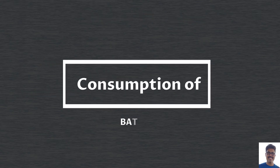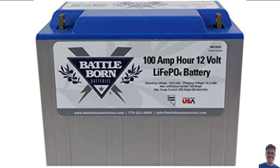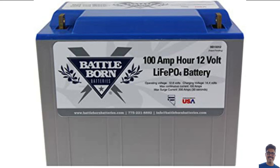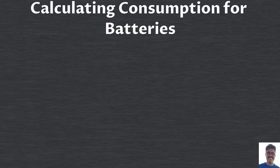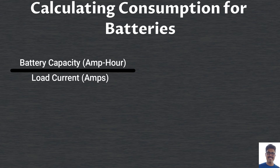Now moving on to the consumption of a battery. If you want to calculate battery run time, you need to know the battery capacity. The battery capacity is mentioned on the battery casing, and the popular unit is ampere-hour. Divide the battery capacity by the total current of your circuit in amps, and the amps cancel out, giving you the run time in hours.